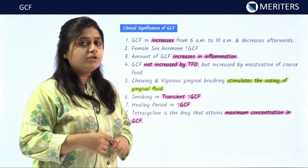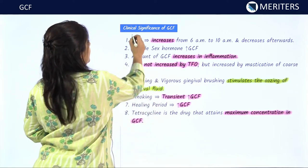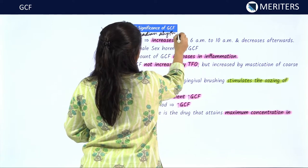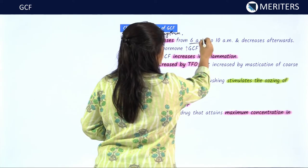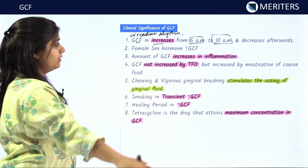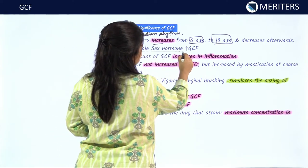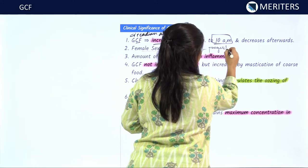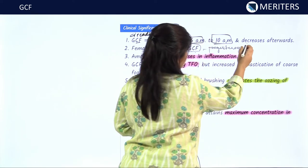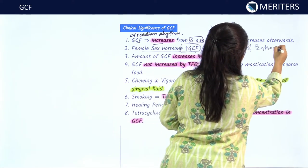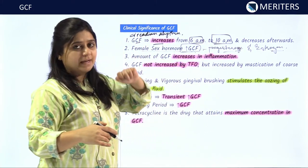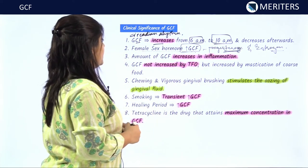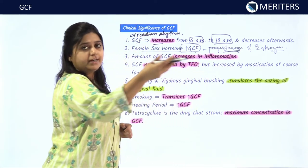GCF shows a circadian rhythm, meaning it increases at a specific period of the day. GCF increases from 6 a.m. to 10 a.m. and after that it starts decreasing. Also, female sex hormones — progesterone and estrogen — are increased in GCF. Progesterone hormones increase during pregnancy and puberty. The amount of GCF increases during inflammation because of increased blood circulation to the inflamed site.